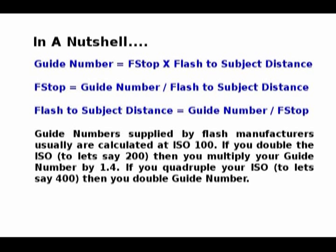You can either take the guide number from the manufacturer or determine your own. A guide number is calculated by taking the f-stop — you do some sample exposures until you get one you like — and you multiply the f-stop times the flash-to-subject distance, and that determines your guide number. If you have a guide number you agree with and want to determine your f-stop, you take the guide number and divide it by the flash-to-subject distance, and that gives you the f-stop to use. The flash-to-subject distance can also be determined by taking the guide number and dividing it by the f-stop.